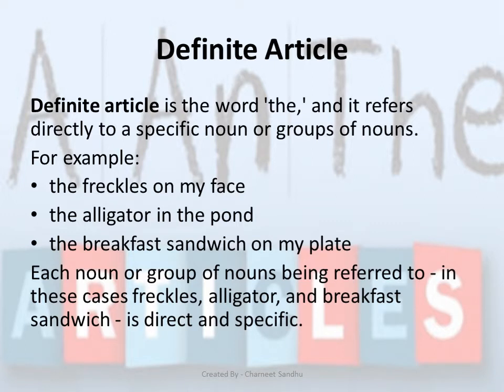What is a definite article? The definite article is the word 'the' and it refers directly to a specific noun or groups of nouns. It limits the meaning of a noun to one particular thing.